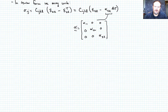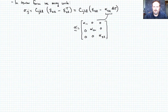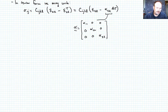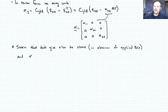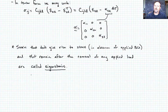I want to define the thermal strain more formally. Any strain that does not contribute to stress — for example, if I take a bar of steel and heat or cool it so it expands or contracts, there's a strain but no macroscopic stress — strains that don't give rise to stress in the absence of applied boundary conditions and that remain after the removal of any load are called eigenstrains.